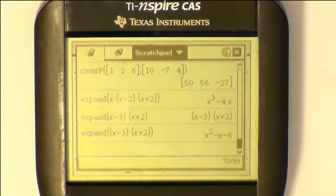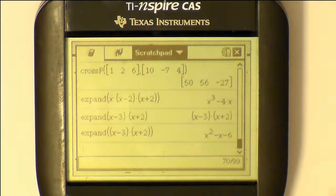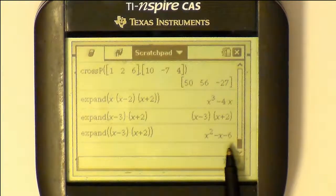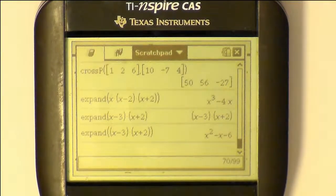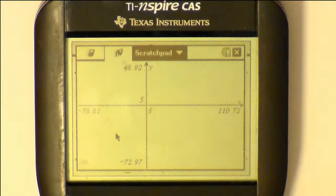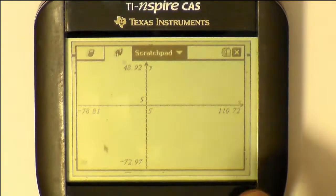So here we are with a Texas Instruments CAS calculator. We could use really any graphing calculator for this video. And we just are going to use a quadratic x squared minus x minus 6. That's easily factorable.